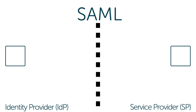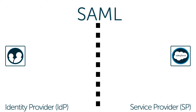The identity provider is where the authoritative version of the credentials are stored. The service provider is something like a website or a web service that needs to receive that set of credentials for authentication purposes.